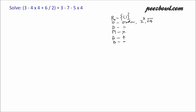So the order in BODMAS: B has the highest priority. If any operation comes within a parenthesis or bracket, that needs to be performed first. Addition and subtraction have the least priority.